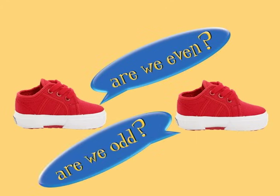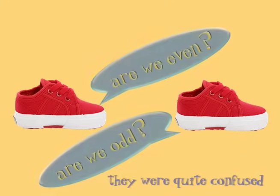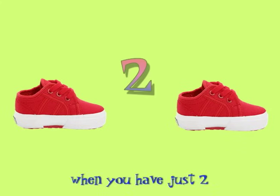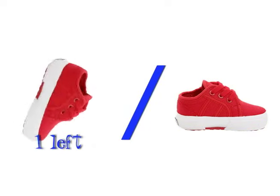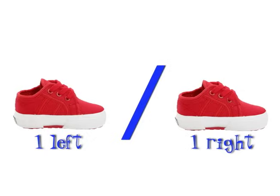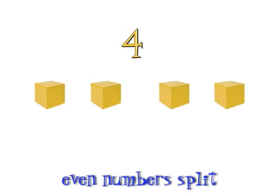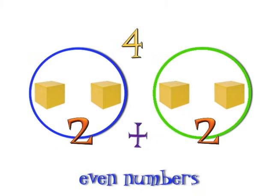Are we even or are we out — as two little shoes? Are we even or are we out? They were quite confused. Sure! Can you split them equally when you have just two? Yes, you can split them right in half — one left and one right. Split them up, even split down the middle. Split them up, even split, say this rhyme.